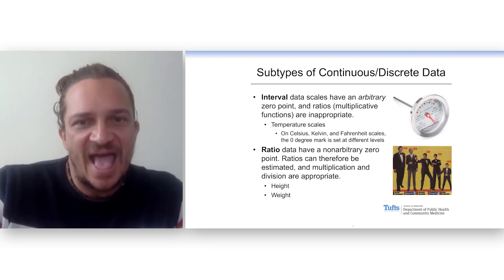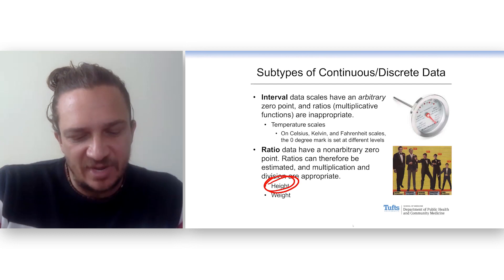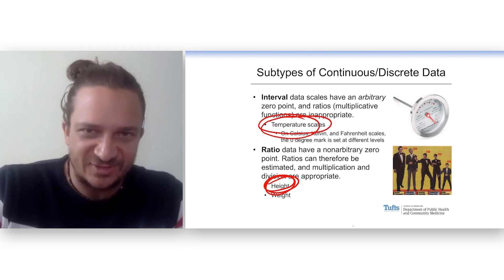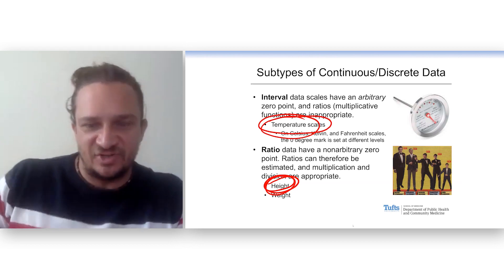So ratio data, however, have that zero point. So you can say that somebody is twice as tall as someone else. But you couldn't say that somebody is twice as hot as someone else if you measured their temperature.